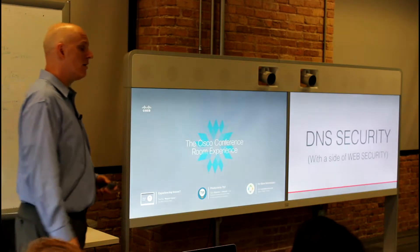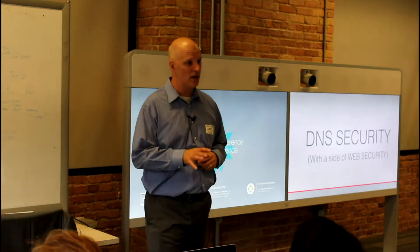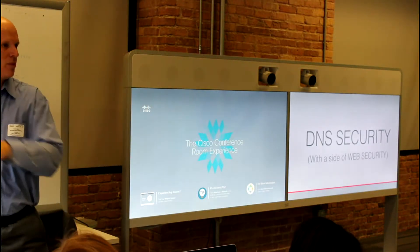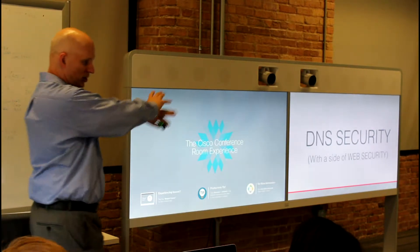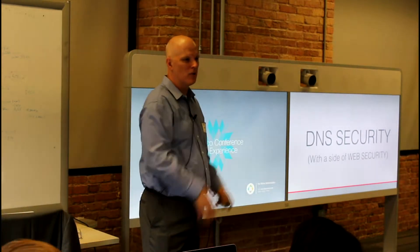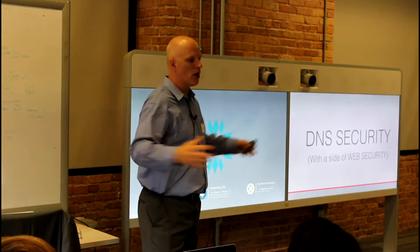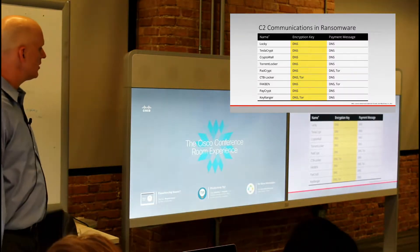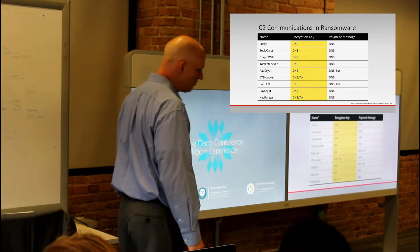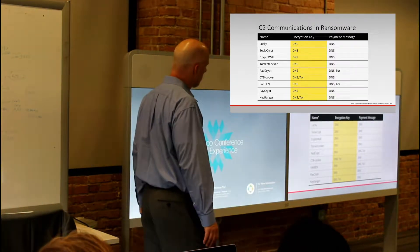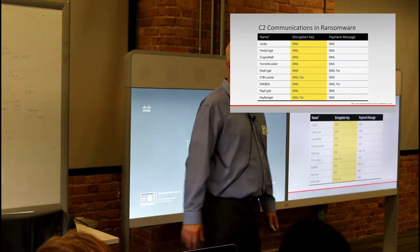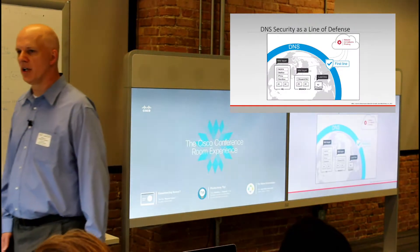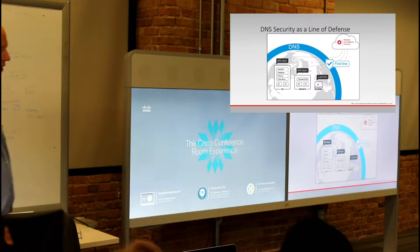Umbrella offers quite a bit of dynamic security — it can say this area has been distributing malware, this subnet has been distributing malicious content — going deeper than just static categories to reflect what's happening right now. This is important because, as shown on this chart, C2 (command and control), ransomware, and many threats utilize DNS and need DNS in order to function.